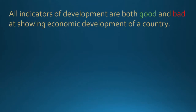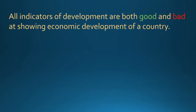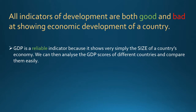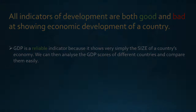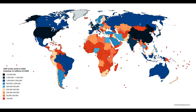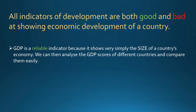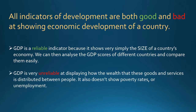All indicators used to measure any kind of development are both good and bad indicators by themselves. GDP is a good statistic to use because it shows us the size of a country's economy, and we can use the score to compare the sizes of different countries' economies. GDP is also an unreliable indicator of development, however. Because the GDP score is a single total, it doesn't show how wealth is produced by an economy and distributed between the people living there.